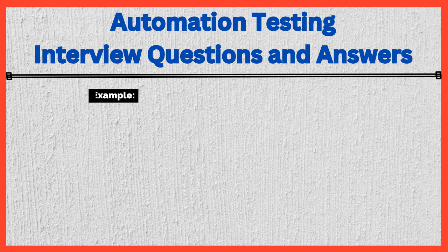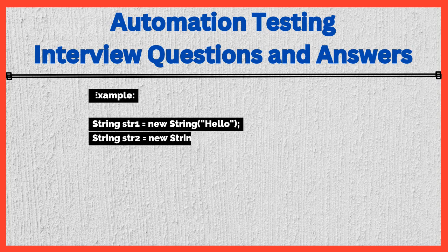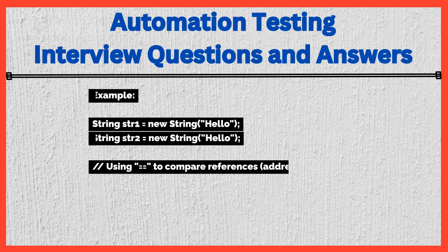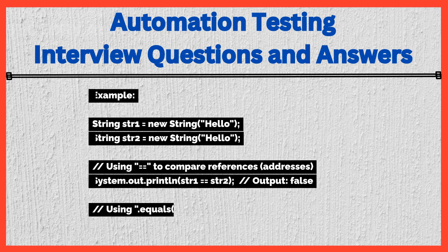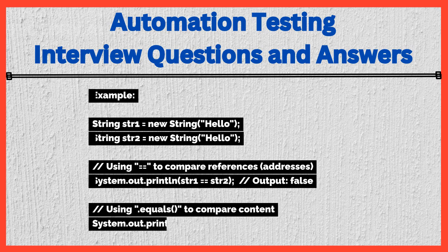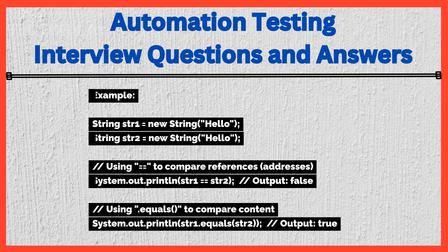Example: String str1 = new String("hello"); String str2 = new String("hello"); // Using == to compare references: System.out.println(str1 == str2); // Output: false. // Using .equals() to compare content: System.out.println(str1.equals(str2)); // Output: true.